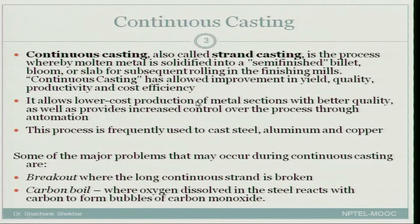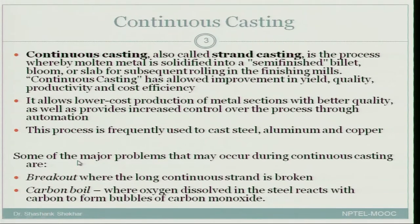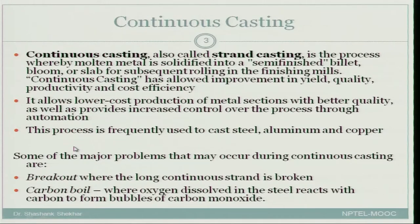Continuous casting, also called strand casting, is the process whereby molten metal is solidified into semi-finished billet, bloom, or slab for subsequent rolling into finishing mills. It has allowed improvement in yield, quality, productivity and cost efficiency. However, it also has some drawbacks: one is breakout, where structural integrity is not maintained and the continuous strand breaks. Another problem is carbon boil, where oxygen dissolved in steel reacts with carbon to form bubbles of carbon monoxide.